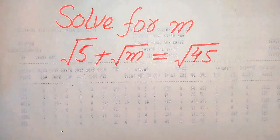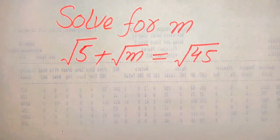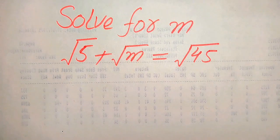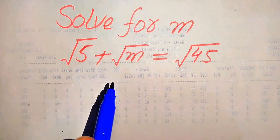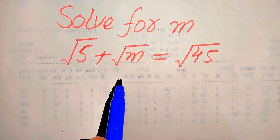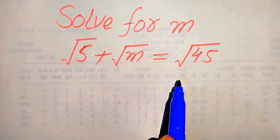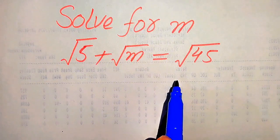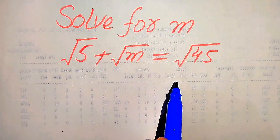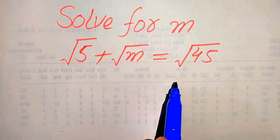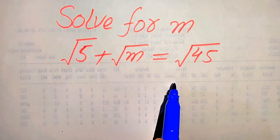Hello everyone. How to solve this problem for the values of m: if we have square root of 5 plus square root of m equals square root of 45, and we solve this problem for the values of m.